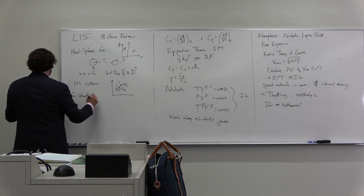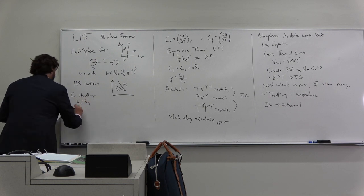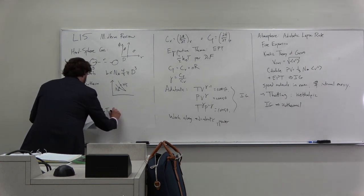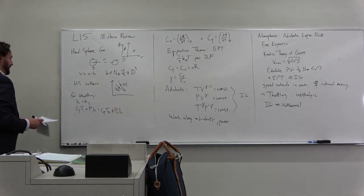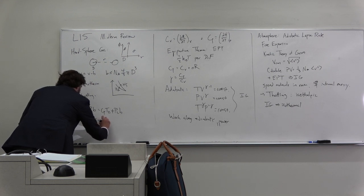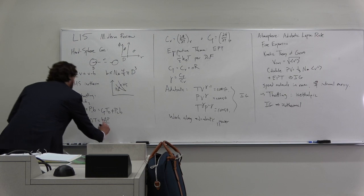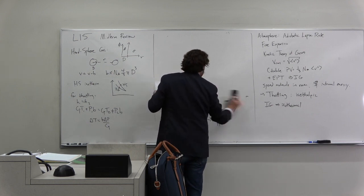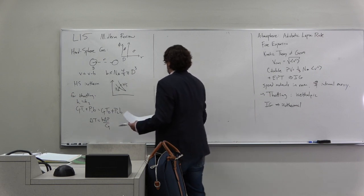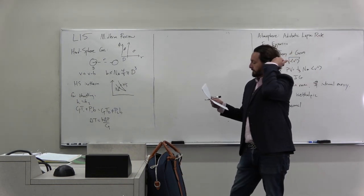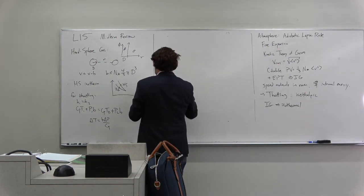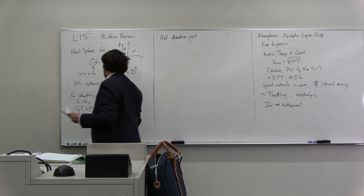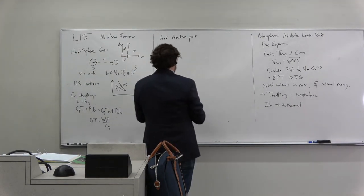For throttling, we got H1 equal to H2: Cp T1 plus P1 B equals Cp T2 plus P2 B, or delta T was B delta P over Cp. If it doesn't look familiar, go back and review it. Just rewatch the videos. Then we had to add the attractive part.